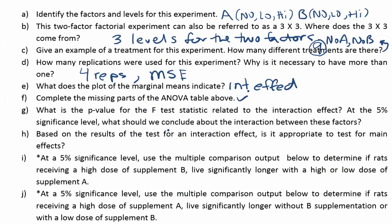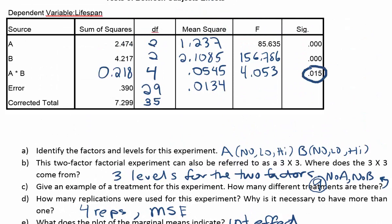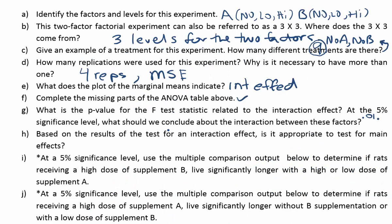We can see here that this significance level is pretty small. It's small enough to assume there's an interaction effect. We completed the ANOVA table, and now we're looking at question G. It says, what is the p-value for the F test statistic related to the interaction effect? At the 5% significance level, what should we conclude about the interaction effect? Remember that the p-value was given here, and it was 0.015. And because of that, we should conclude there is an interaction effect. We're going to say there does seem to be an interaction effect because that 0.015 is less than 5%, so it means we reject the null hypothesis that there is no interaction effect.